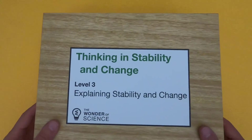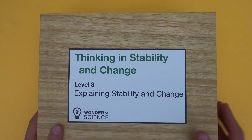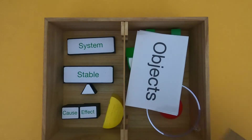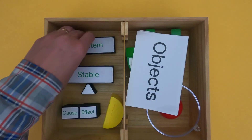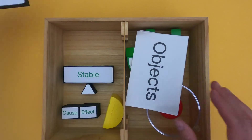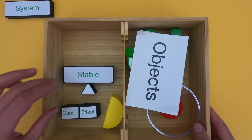Hi, it's Mr. Andersen and this is Thinking in Stability and Change, Level 3, Explaining Stability and Change. When you're trying to explain stability and change, the first thing you always want to do is define the system that you're trying to explain.